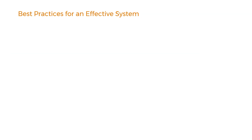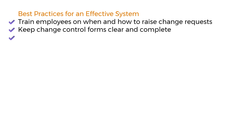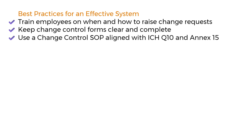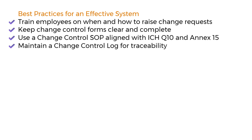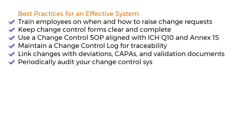Best practices to strengthen your change control process: train employees on when and how to raise change requests; keep change control forms clear and complete; use a change control SOP aligned with ICH Q10 and Annex 15; maintain a change control log for traceability; link changes with deviations, CAPA, and validation documents; and periodically audit your change control system.